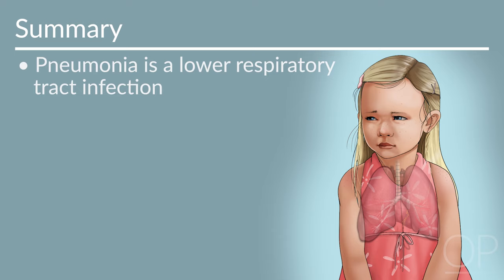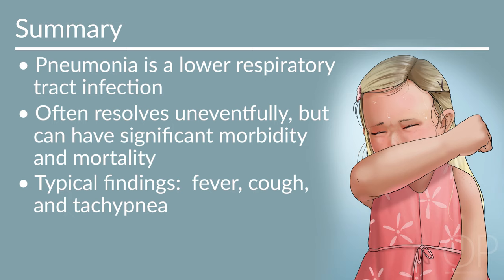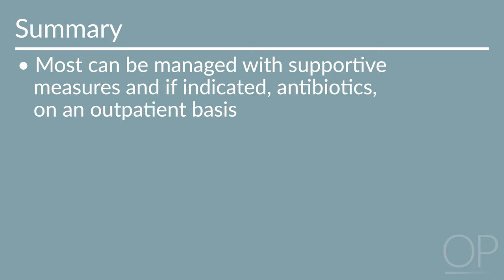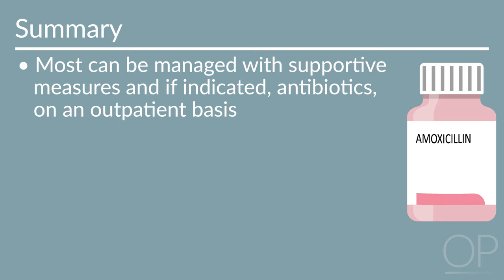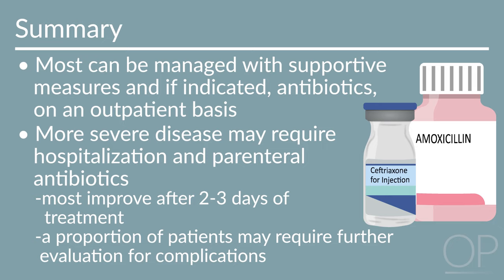Summary. Pneumonia is a lower respiratory tract infection most frequently caused by viruses in young children and by bacteria, including atypical organisms, in older children. It often resolves uneventfully but can have significant morbidity and mortality, especially with underlying chronic disease or complicated pneumonia. Typical findings on clinical exam include fever, cough, and tachypnea. Most children with pneumonia can be managed with supportive measures and, if indicated, antibiotics on an outpatient basis. However, patients with more severe disease may require hospitalization and parenteral antibiotics. While most improve after 2–3 days of treatment, a proportion may require further evaluation for complications such as pleural effusion and pulmonary abscesses. Thank you for watching this video on pneumonia.